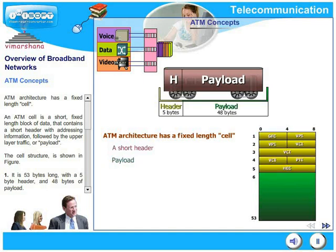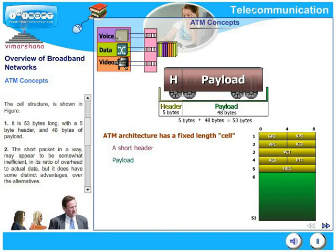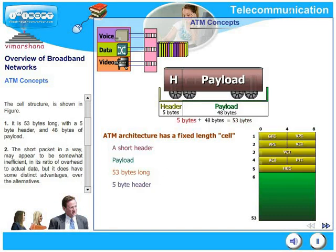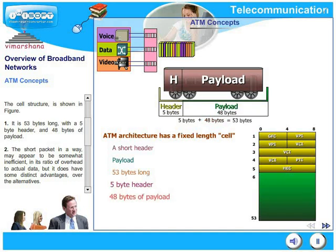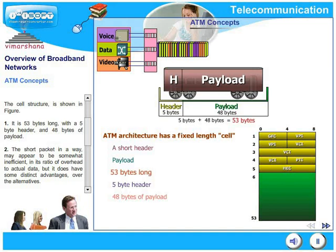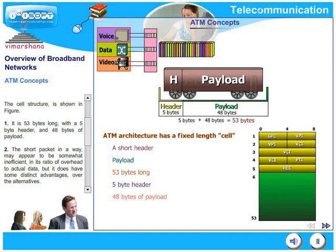The cell structure is seen in the figure. It is 53 bytes long, with a 5-byte header and 48 bytes of payload. A 5-byte header and 48 bytes of payload put together make a 53-byte fixed length cell, and that is the hallmark of ATM.